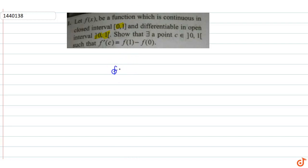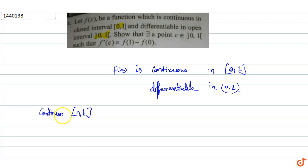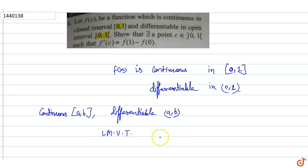We know that f(x) is continuous on [0,1] and differentiable in the open interval (0,1). So we know that if any function f(x) is continuous in [a,b] and differentiable in the open interval (a,b), then by the Lagrange Mean Value Theorem...